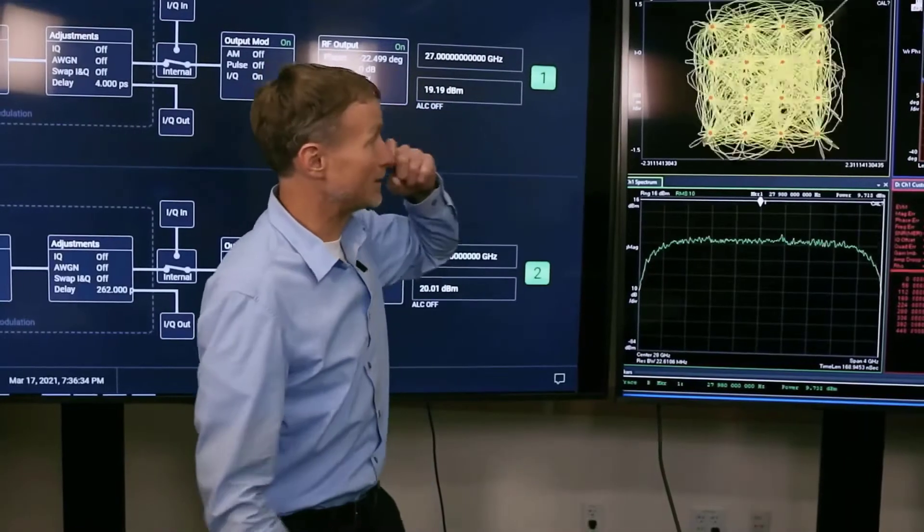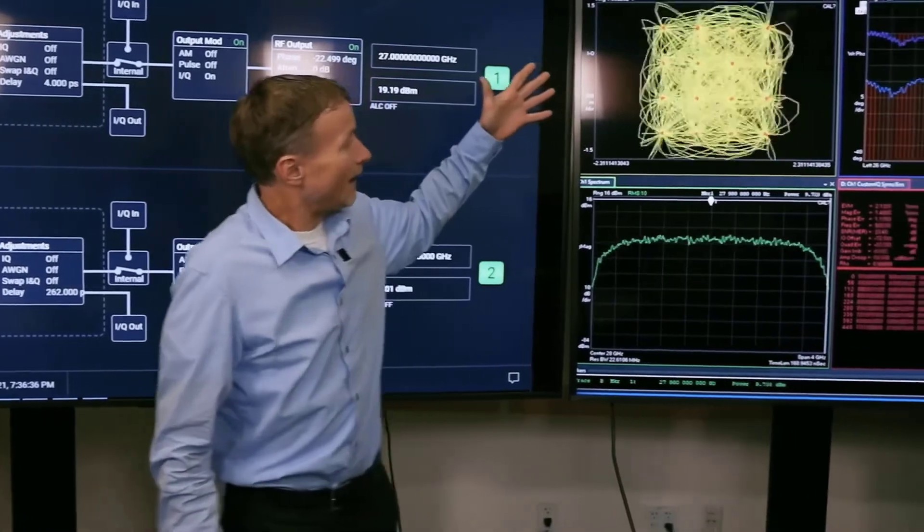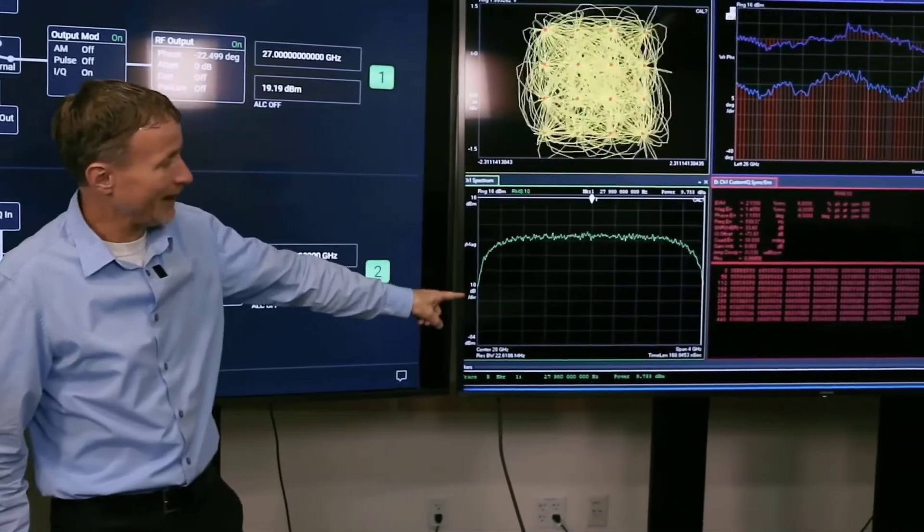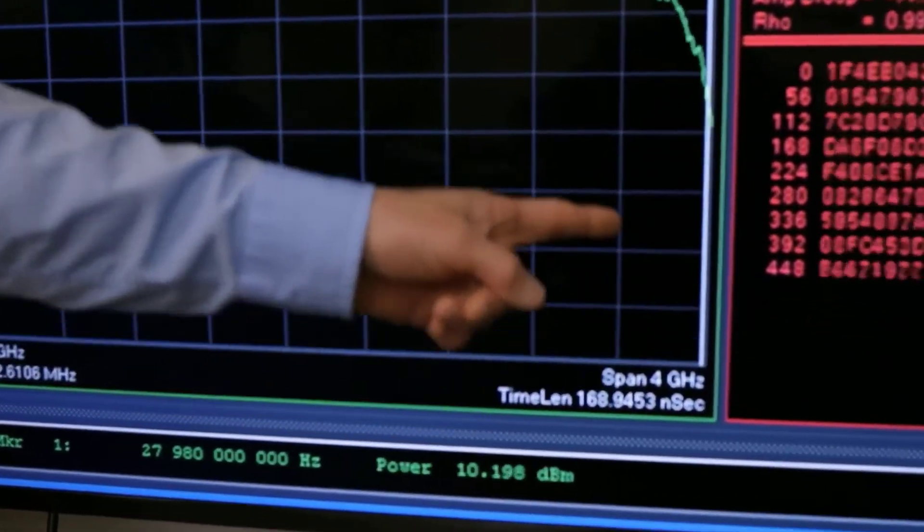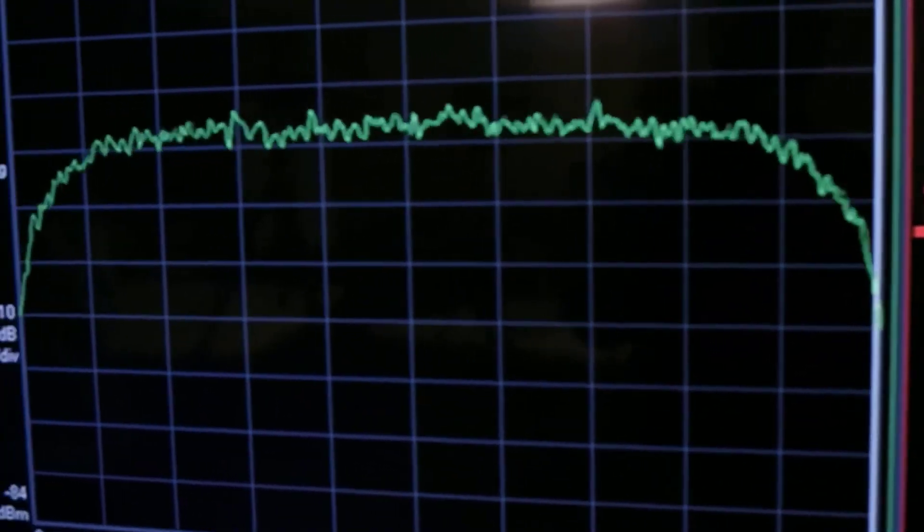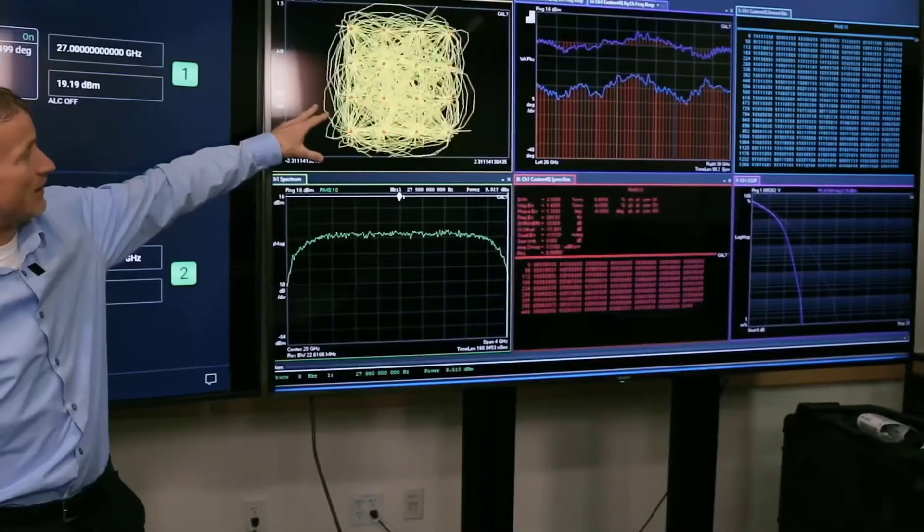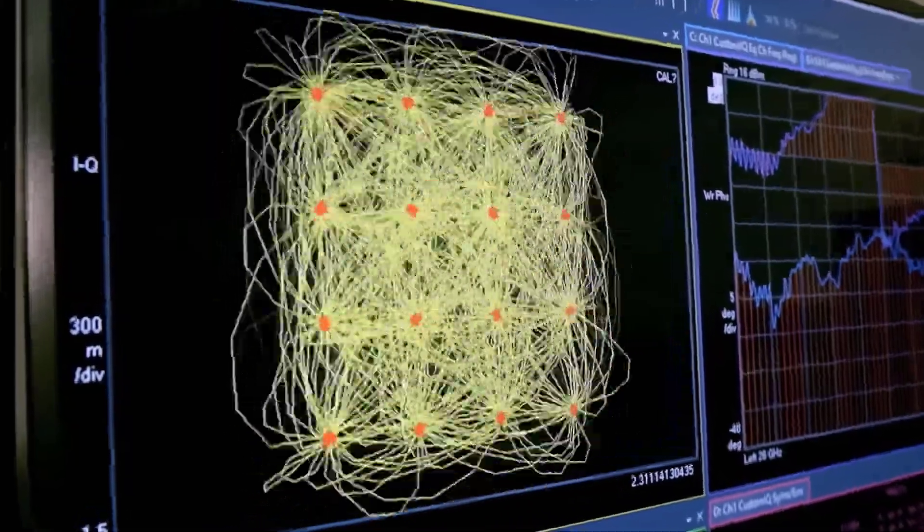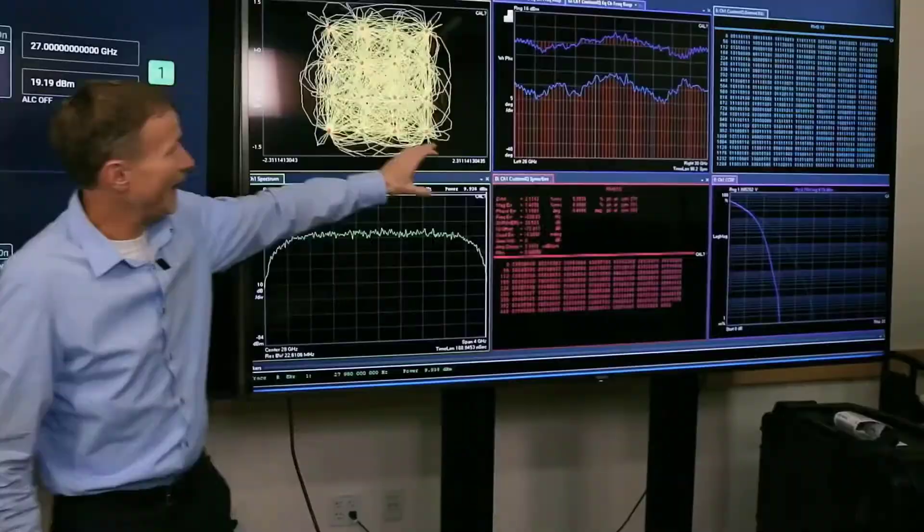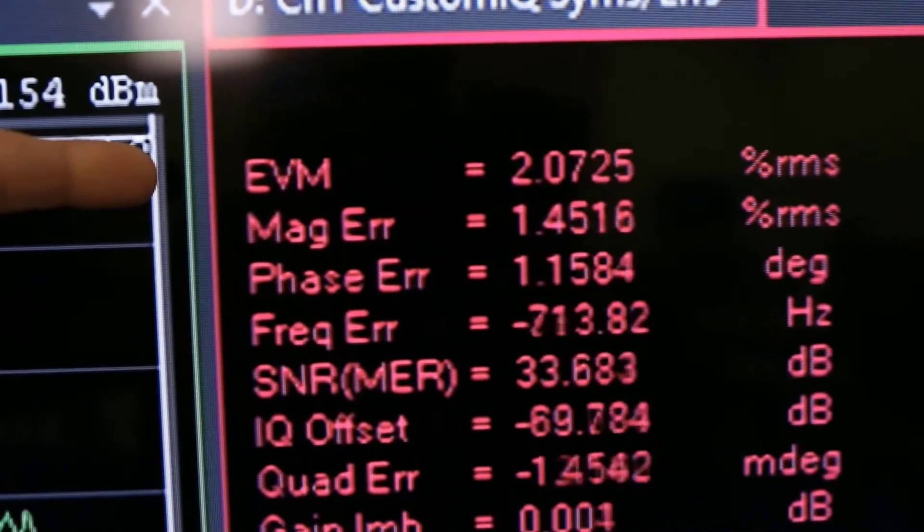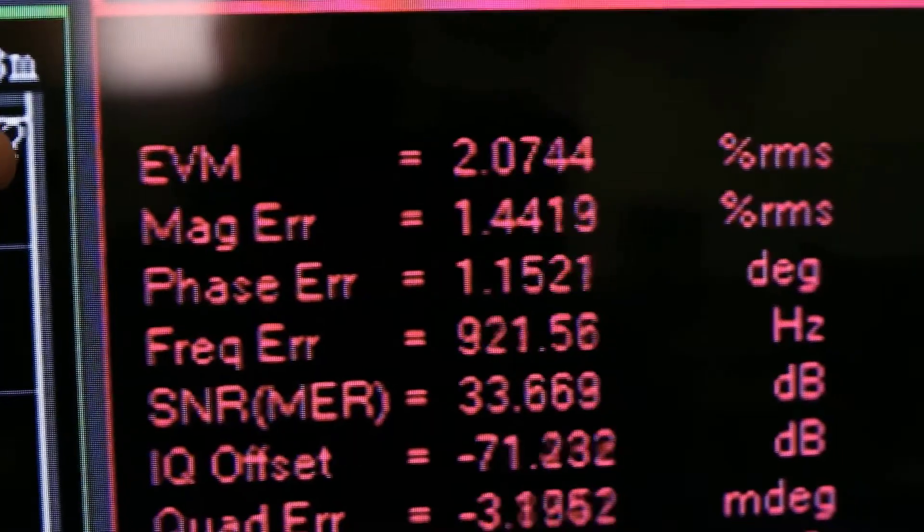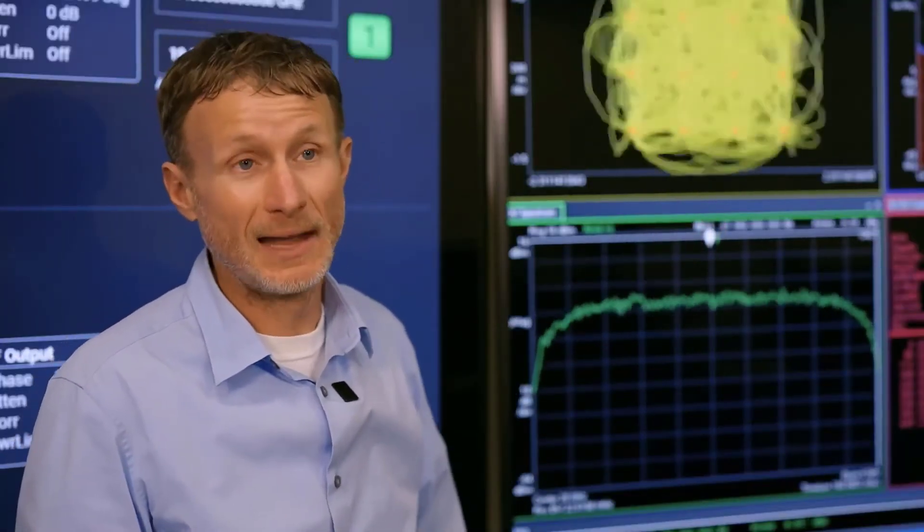Now let's take a look at the demodulation results. On the bottom lower left, you can see the span is 4 gigahertz, and I'm literally filling up that entire spectrum you can see here. You can see the constellation diagram, nice, tight and clean, 16 QAM. And the EVM that we're getting is right at 2%. So that's a phenomenal result under these conditions, and we're making use of the wide bandwidth capability in the next generation UXA.